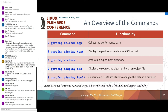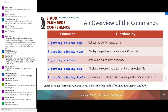We currently have five commands: 'collect app' to collect performance data, 'display text' to display it in ASCII format, the archive command, a tool that takes an object file and displays source with disassembly interleaved, and a tool in progress to generate an HTML structure — a directory with HTML files you can navigate in a browser. That HTML tool is currently there but not very functional yet; hopefully that'll change very soon.